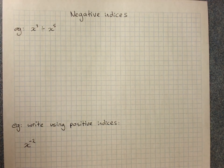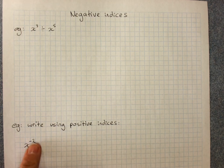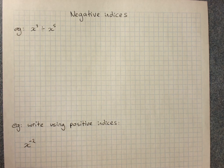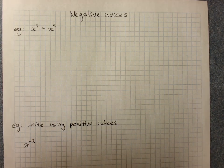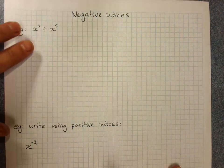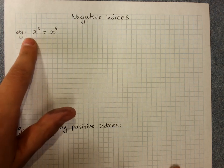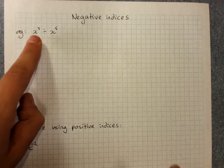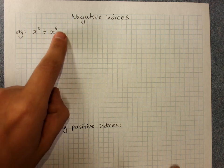Negative indices. A negative power is when the index has a negative in front of it, and we're going to learn how to deal with those. We're going to start with an expression that will get a negative power: x cubed divided by x to the 5.